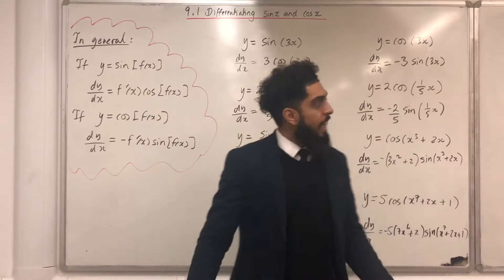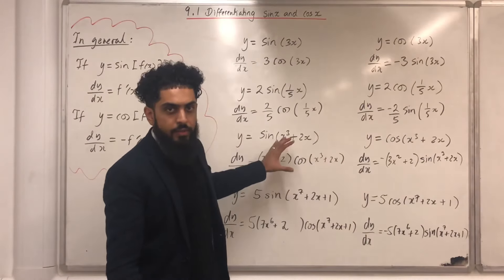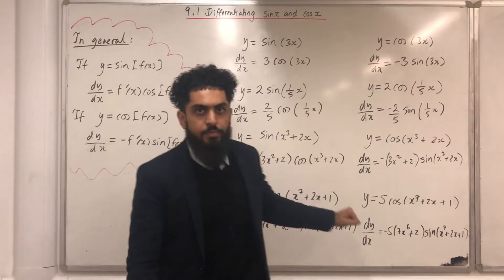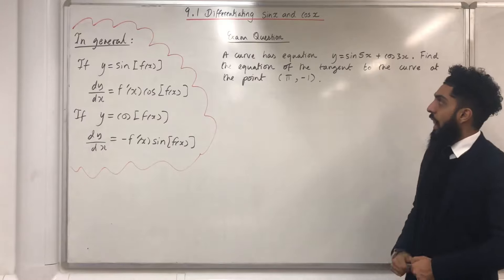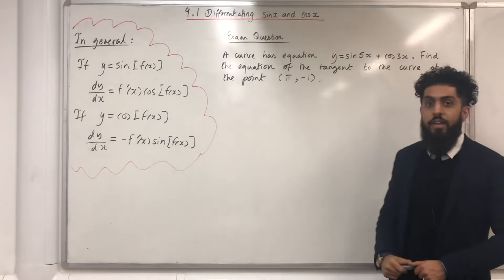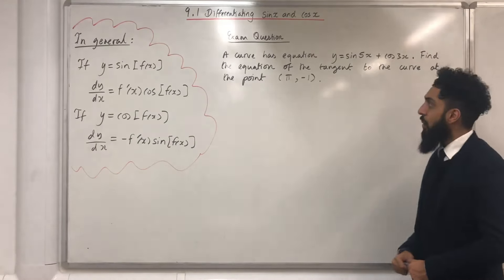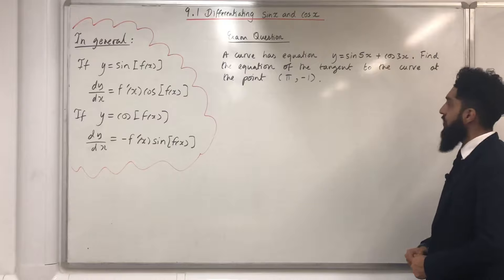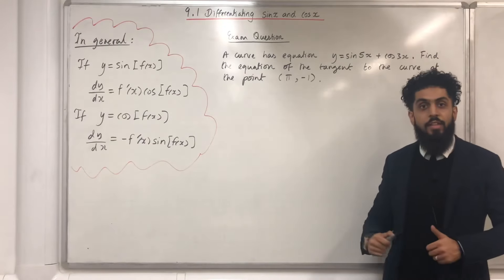And that is how you differentiate Sine and Cos. Here is an exam question: a curve has equation y equals Sine 5x plus Cos 3x. Find the equation of the tangent to the curve at the point pi, minus 1.